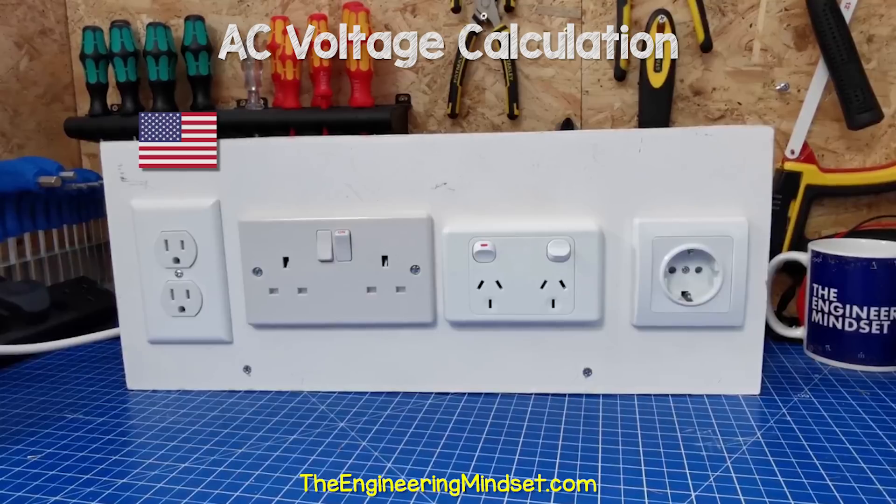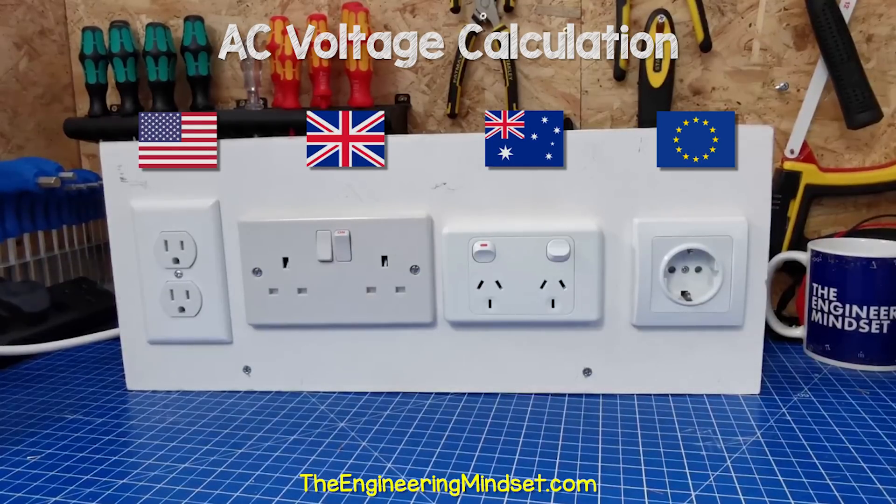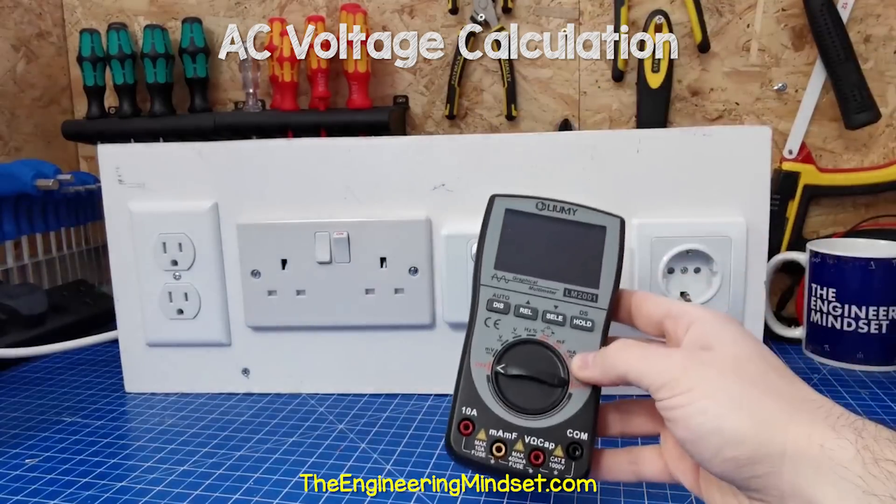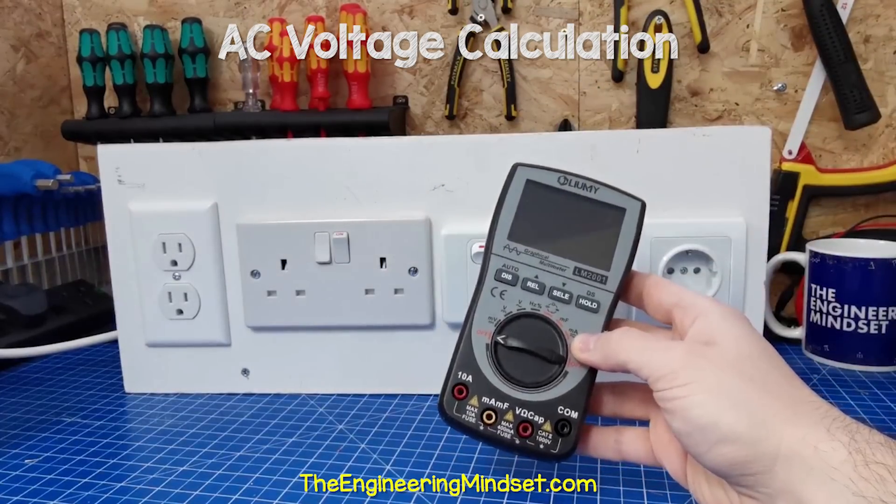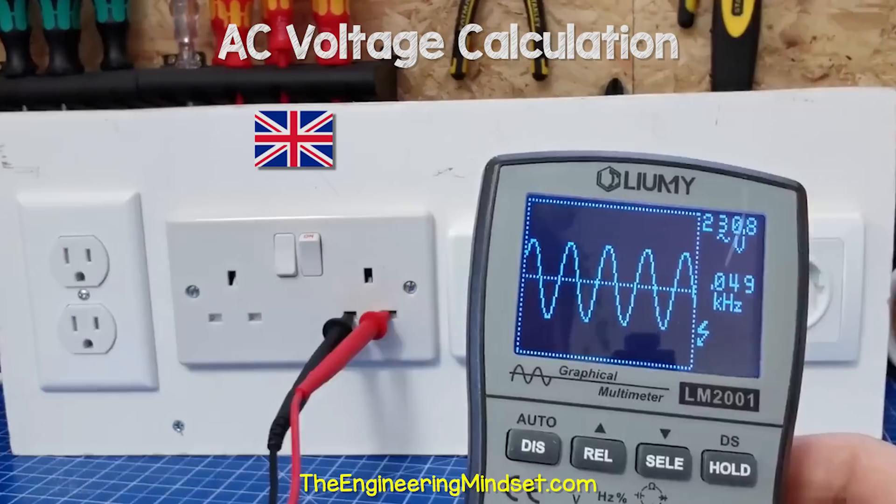For example, here I have a North American, British, Australian and European power outlets. This multimeter shows basic waveforms and when I connect to any of these between the phase and neutral, we see a sine wave, which is indicating this is AC electricity.